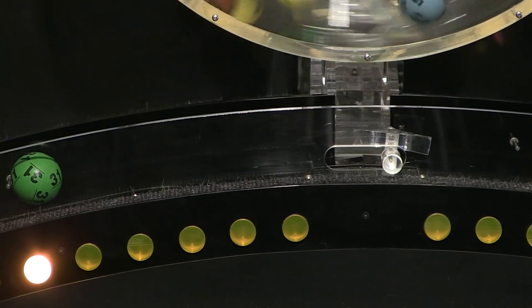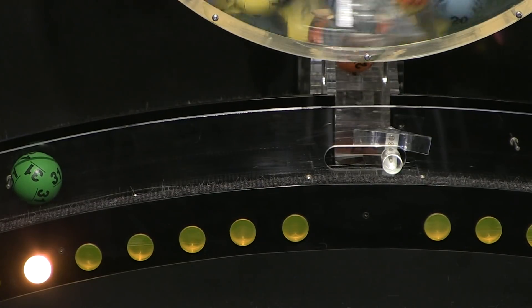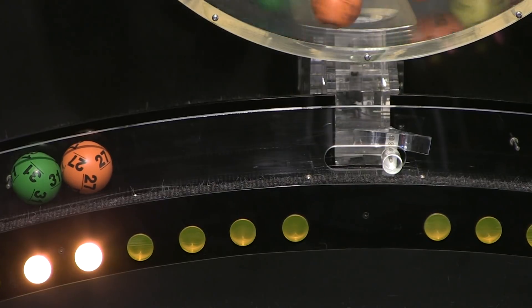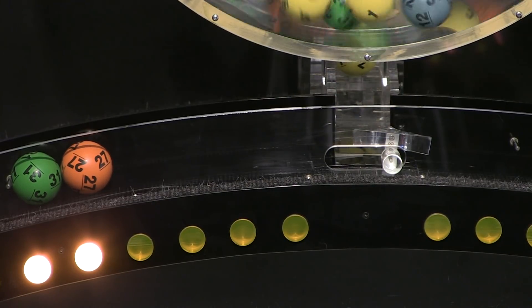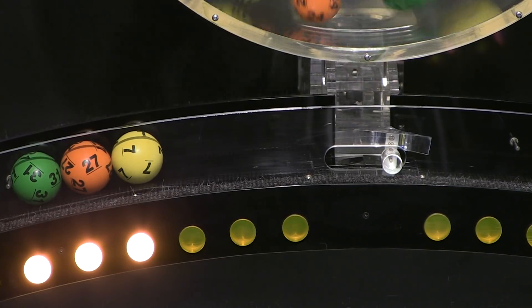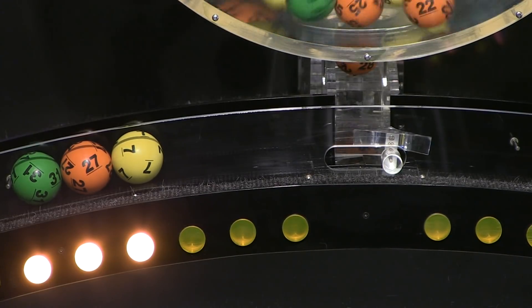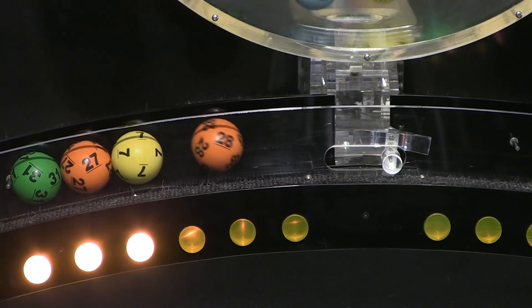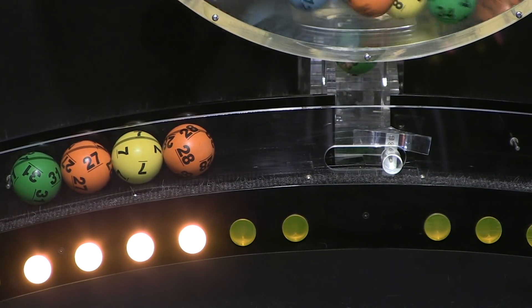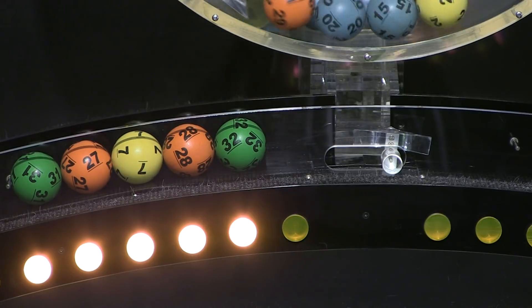First number is number 31, and following that we have number 27. And here comes number seven. Up next is 28, and the final ball in this sequence is number 32.